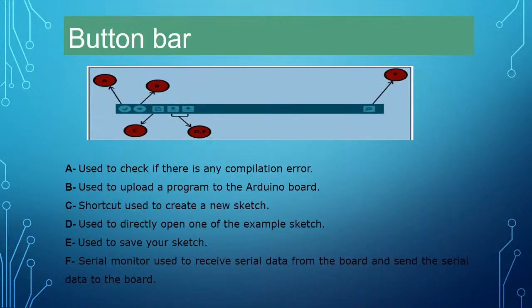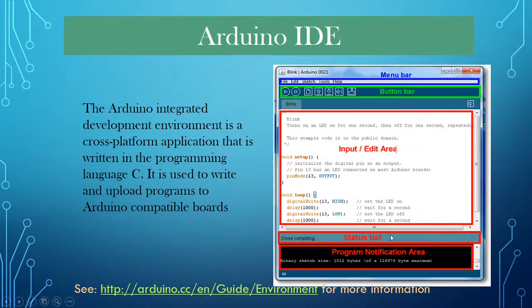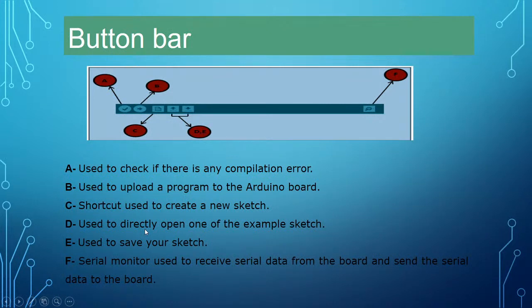There are six button bars — five on the left and one on the right. The first button (tick mark) checks for compilation errors; if there are errors, they show in the status bar with a 'done compiling' or error message. The second button uploads the program to the Arduino controller through USB cable. Other buttons include shortcuts for creating sketches, opening example programs, and saving files.